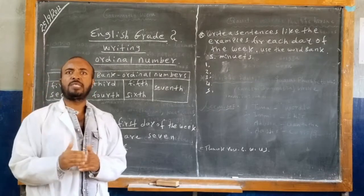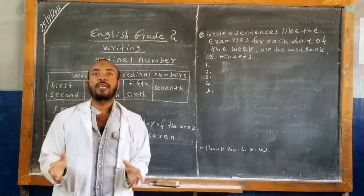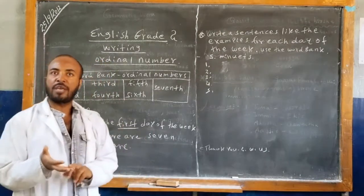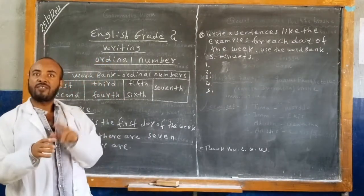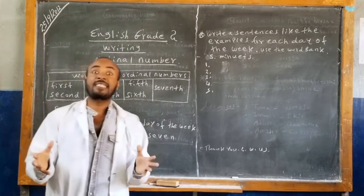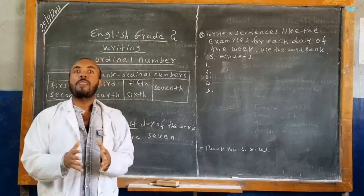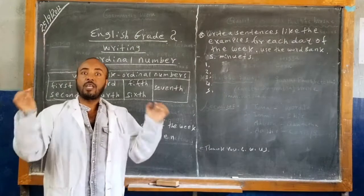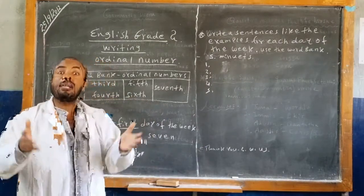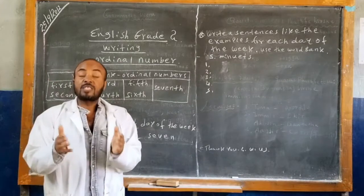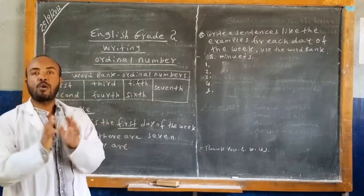Let me repeat, students. In a week, there are seven days. You know that, students: Monday, Tuesday, Wednesday, Thursday, Friday, Saturday and Sunday. They are the days in a week. In a week, there are seven days. We can write these seven days by using the ordinal numbers.